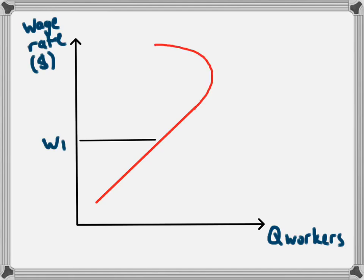So when the wage rate gets really high, people will start to actually decrease the amount of labour that they will supply and we end up with what we call a backward bending supply of labour curve.